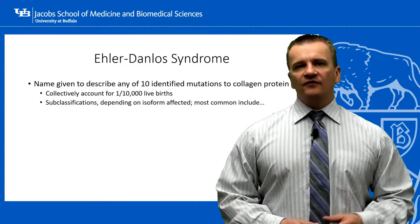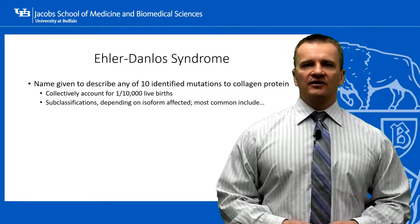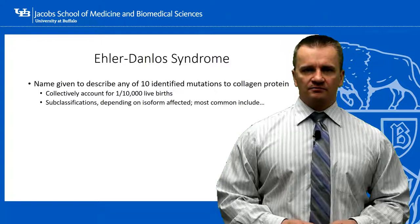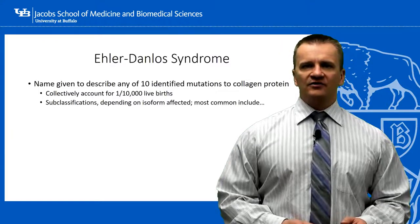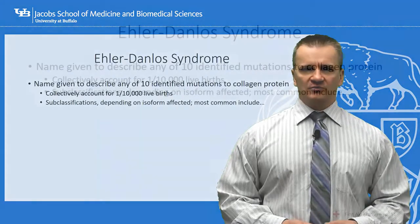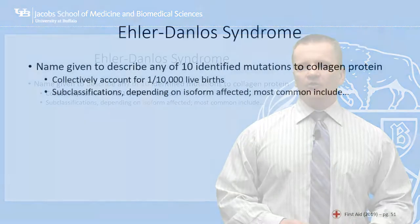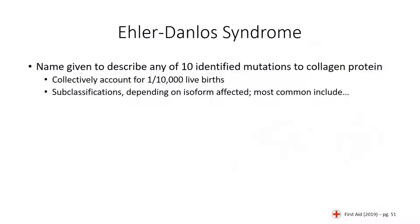The first condition we will look at is Ehlers-Danlos Syndrome. This is not related to a single type of gene mutation, or even a series of mutations to a single gene. This is actually a large group of disorders where one or more of the different forms of collagen is mutated.